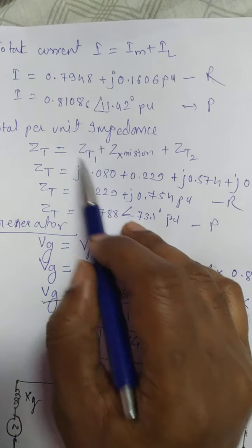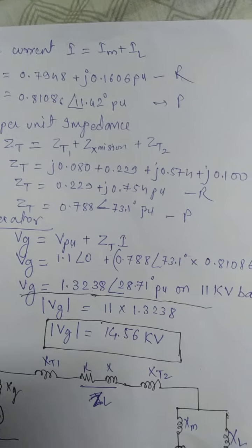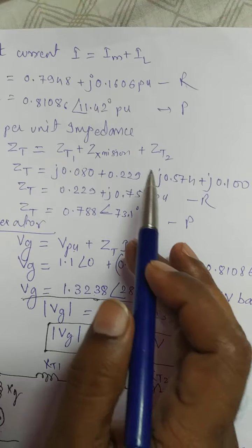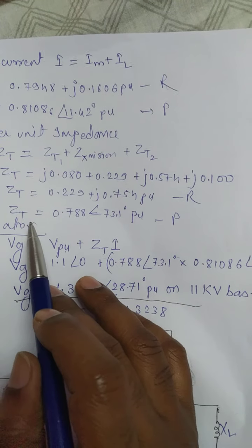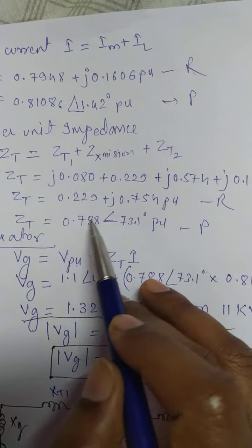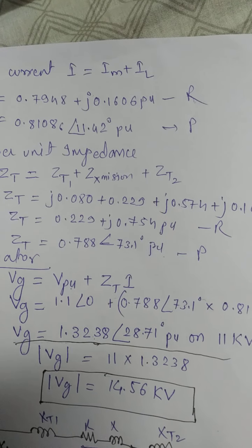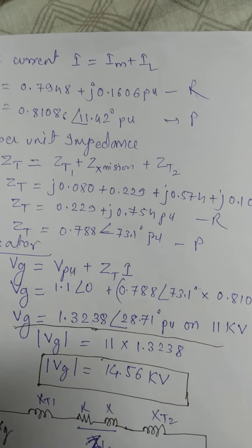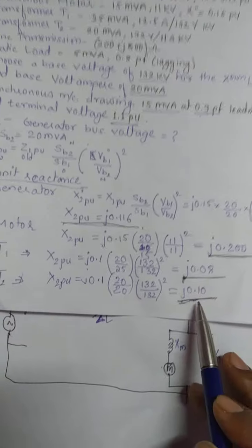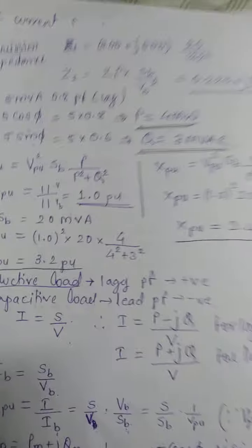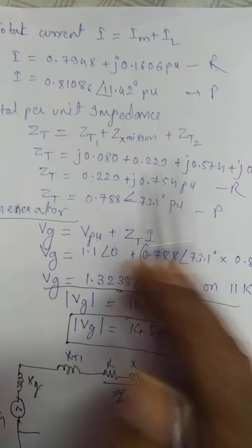ZT2 is nothing but transformer 2 impedance. After adding these three values — transformer T1, transformer T2, and transmission line — you get the value of ZT. This is the rectangular value and this is the polar value. You know the value of transformer T1, T2, and the transmission line, so add these three values to get ZT.